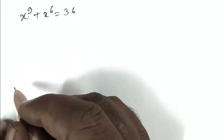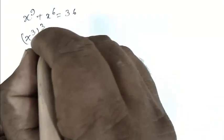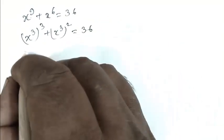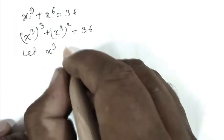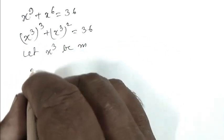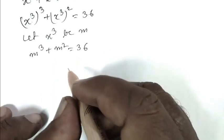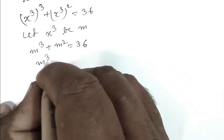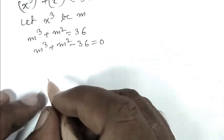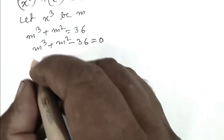So friend, x cube cubed plus x cube squared equals 36. Let x cube be m, so we replace x cube by m. So m cubed plus m squared equals 36, or m cubed plus m squared minus 36 equals 0. Now friend, let's factorize this equation.